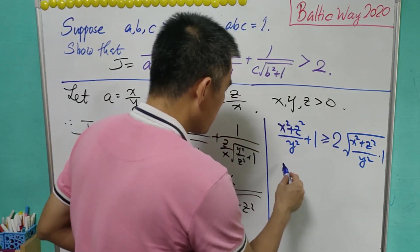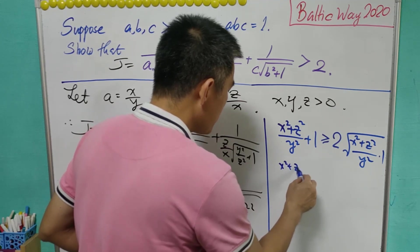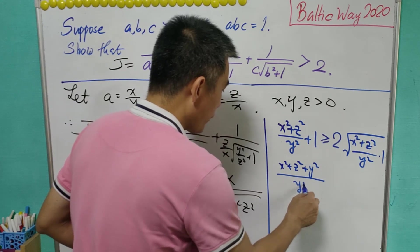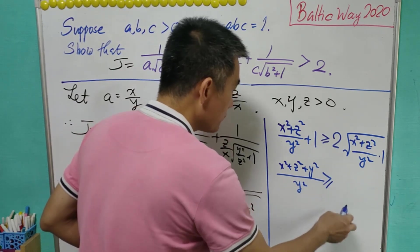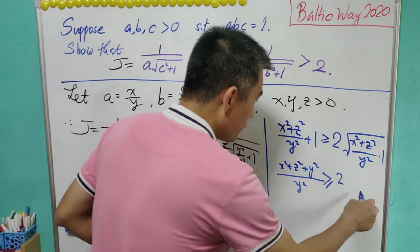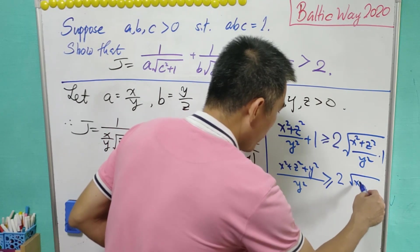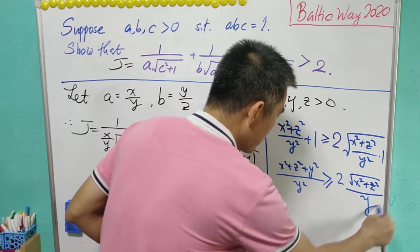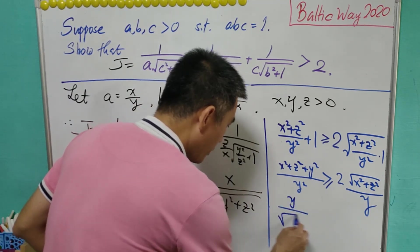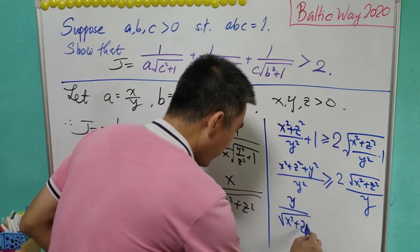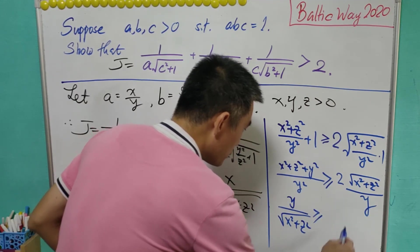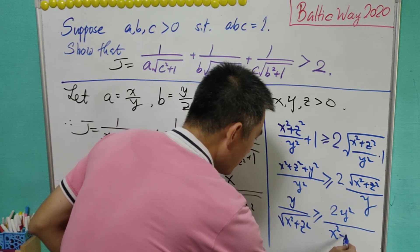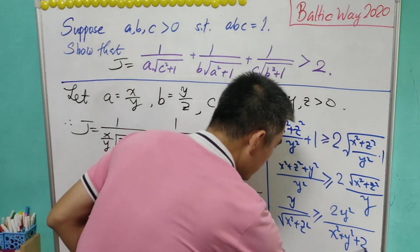The left hand side is actually equal to (x squared plus z squared plus y squared) over y squared. This is greater than or equal to 2 times square root of (x squared plus z squared) over y. This means that y over square root of (x squared plus z squared) is greater than or equal to 2y squared over (x squared plus y squared plus z squared).